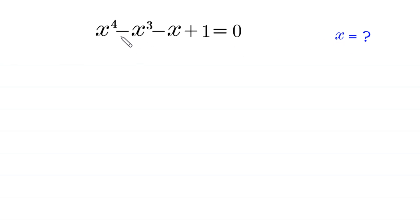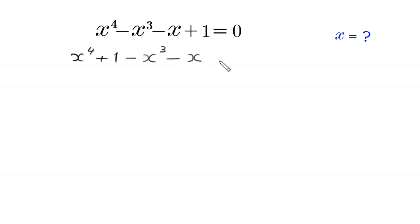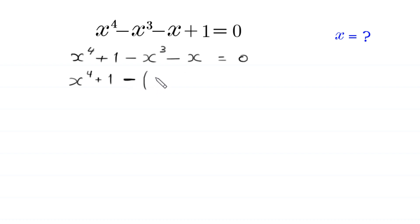First, we rearrange this expression on the left-hand side. We write x to the power 4 first, then plus 1, then negative x cubed, and finally negative x, all equal to 0. Next, from the two terms negative x cubed and negative x, we factor out the negative sign as a common factor, leaving positive x cubed plus x in brackets.